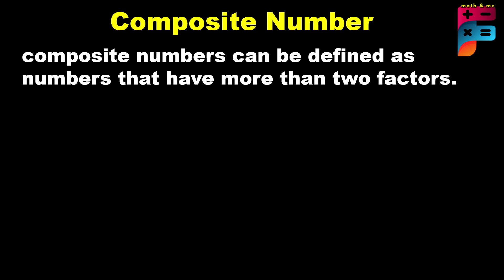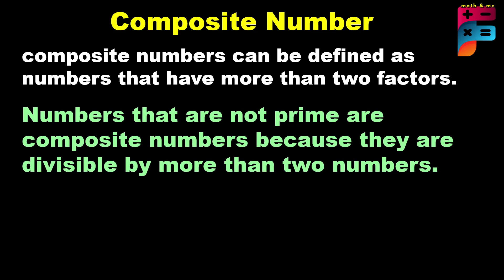Composite numbers can be defined as numbers that have more than two factors. A prime number has only two factors — one and itself — but a composite number has more than two factors. Numbers that are not prime are composite numbers, because they are divisible by more than two numbers.